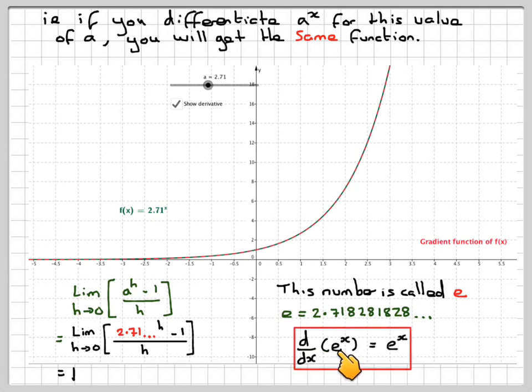And therefore, what we're saying is, if we take the derivative of this number to the power of x, we get the same function, and that's quite an important fact. So d dx of e to the x is actually e to the x, and this is why it's so important.